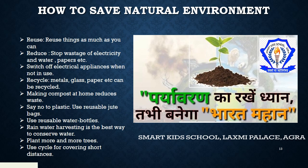Making compost at home reduces waste — घर में biodegradable waste का हम compost बना सकते हैं जिसे kitchen garden और pots यानि गमलों आदि में इस्तेमाल किया जा सकता है। Say no to plastic — plastic को जितना हो सके उतना कम इस्तेमाल करना चाहिए। इसके लिए हमें jute bags के इस्तेमाल को बढ़ाना चाहिए। Plastic water bottles की बजाए reusable water bottles यूज़ करनी चाहिए।